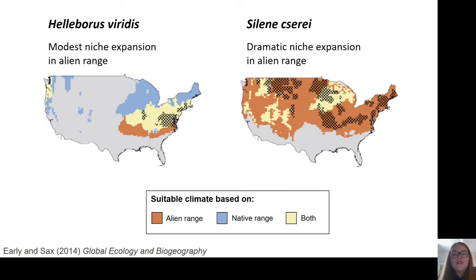This limited transferability of ecological niche models is a problem for being able to predict alien spread, and it raises the question of whether there's a different approach that doesn't rely on niche estimates. And this led us to the idea of environmental resistance.